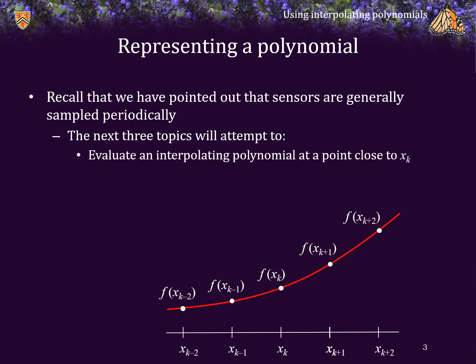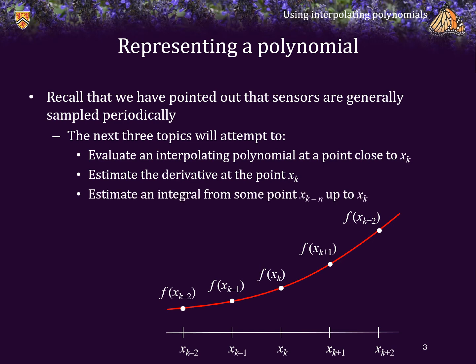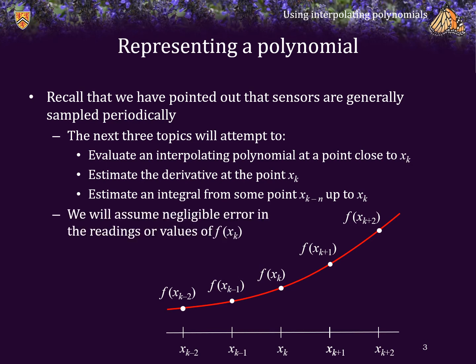In the next three topics we will attempt to: evaluate an interpolating polynomial at a point close to x_k, estimate the derivative at the point x_k, and estimate an integral from some point prior to x_k up until the current point. In each case we assume there is essentially negligible error in the readings — the values are reasonably exact — and so we will be able to use, for example, Taylor's theorem to find such approximations and determine any errors.